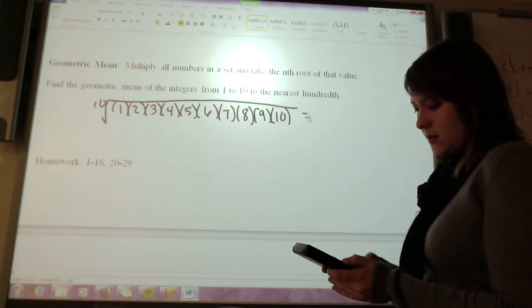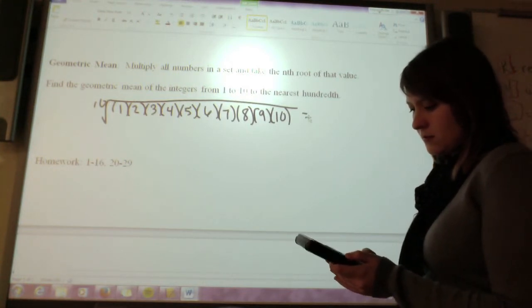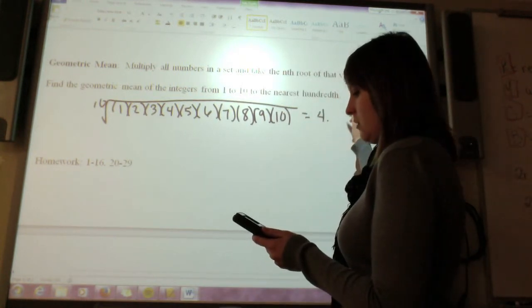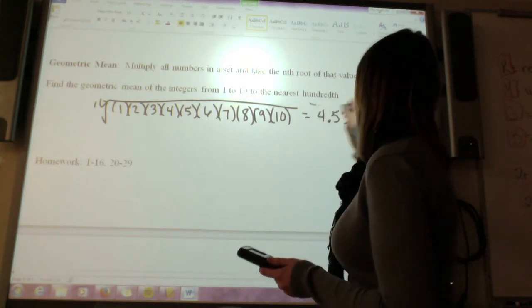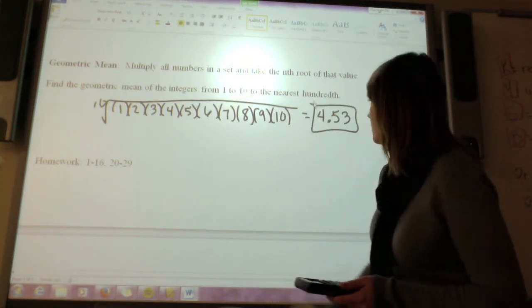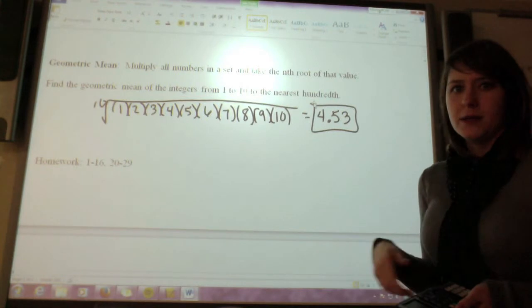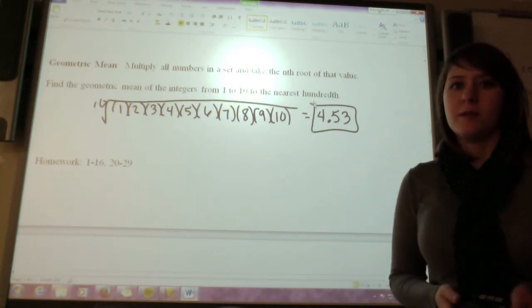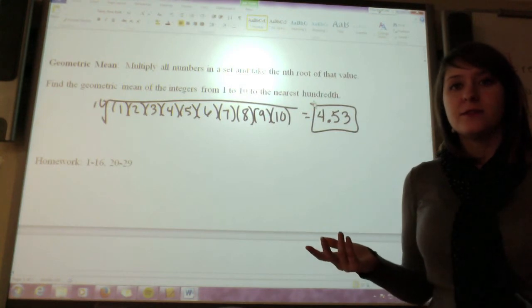Okay, and then I'm going to take that to the 1 tenth, and I get 4.53 to the nearest hundredth. Okay, and I round it up because it asked me to do it to the nearest hundredth. So that is how you find a geometric mean. And that's everything for section 5.